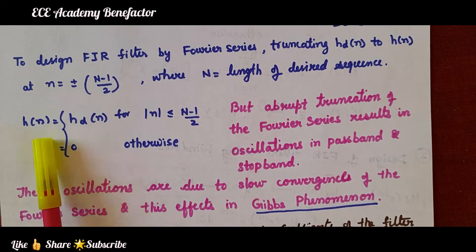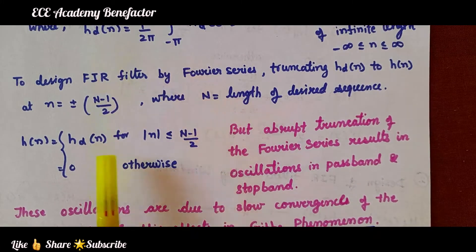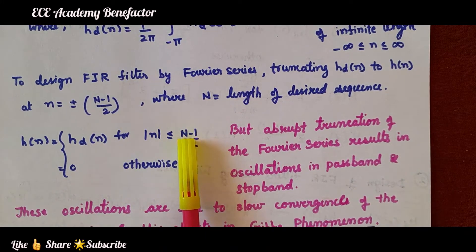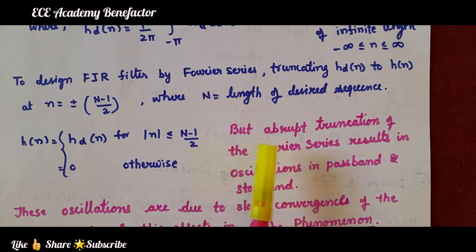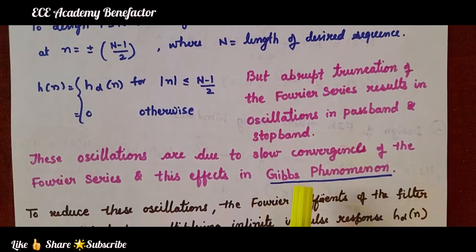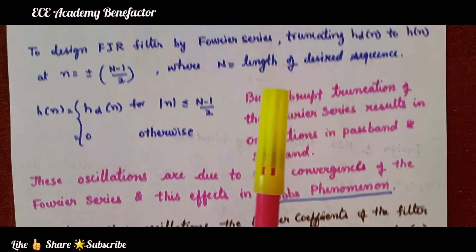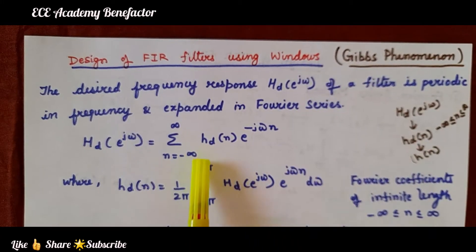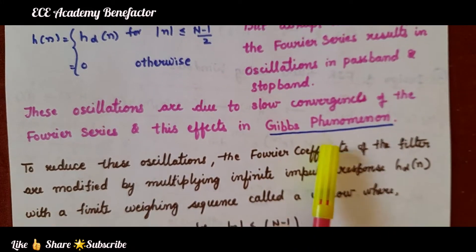While truncating this infinite sequence H_d(n) directly to this length, oscillations occur in the passband and stopband. Abrupt truncation of the Fourier series results in oscillations in the passband and stopband. These oscillations are due to the slow convergence of the Fourier series of H_d(e^jω), which results in the effect known as Gibbs phenomenon.